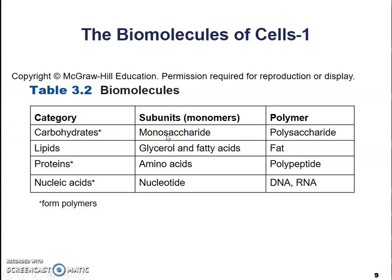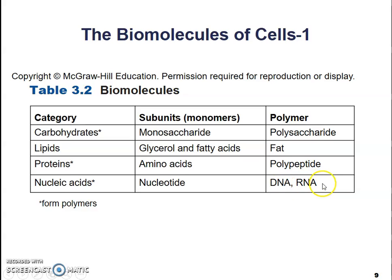The monomer of carbohydrates are monosaccharides — mono meaning one — and the polymer are polysaccharides, poly meaning many. Lipids are formed by two molecules: a glycerol and fatty acids, known once put together as a fat. Proteins are made out of amino acid monomers and they form polypeptides. Nucleic acids are formed from nucleotides and they make up the molecules DNA and RNA.